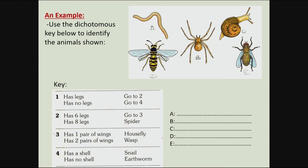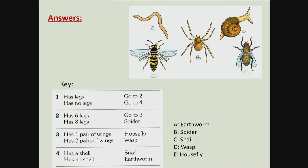Let's see whether you got all the answers correctly. Using the key correctly, animal A is an earthworm, as we did together. Animal B is a spider, C is a snail, D is a wasp, and E is a housefly. It's important to use the picture of the animals together with the key descriptions and names. Remember: when identifying each organism, you must always begin from the top stage, and it will guide you all the way to the name of that organism.